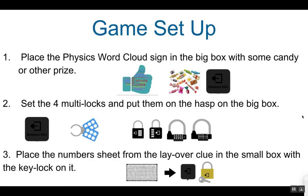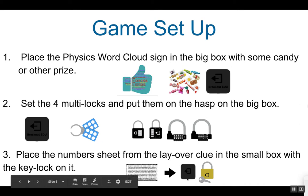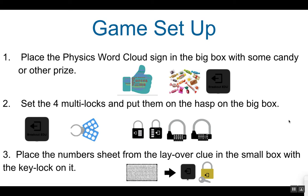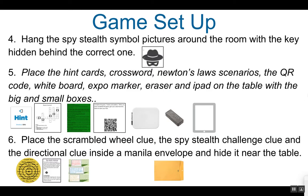To set up the game, you will need to first place the physics word cloud, shown here, in the big box with some candy or some other kind of prize. Set the 4 multi-locks as previously mentioned and put them on the hasp on the big box. Place the numbers sheet from the layover clue, which looks like this, in the small box with the key lock on it.